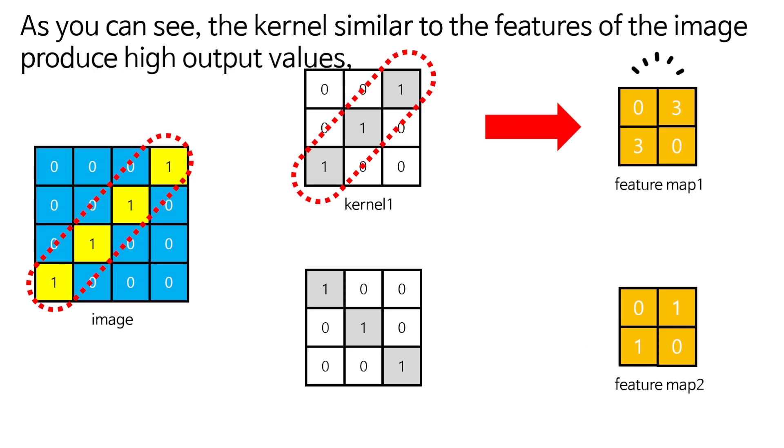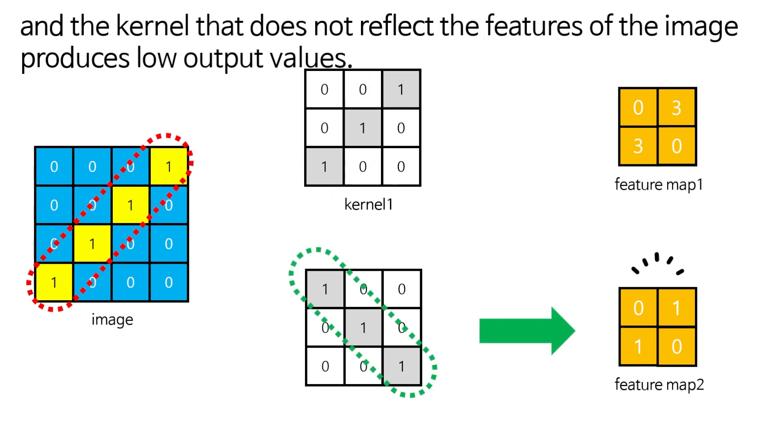As you can see, the kernel similar to the features of the image produces high output values, and the kernel that does not reflect the features of the image produces low output values.